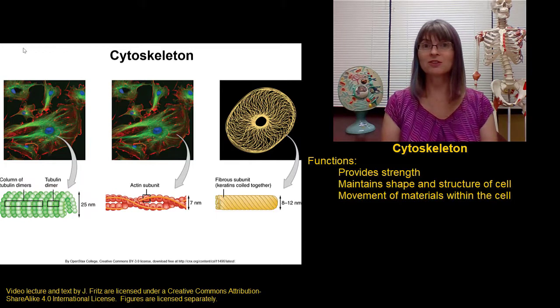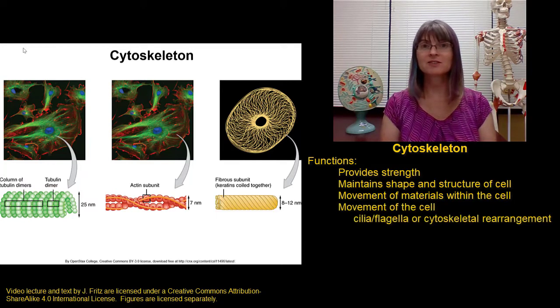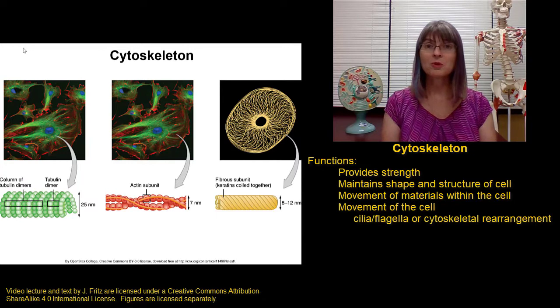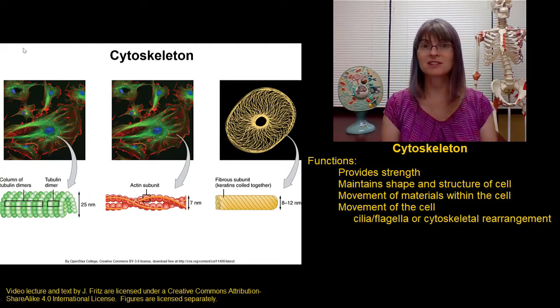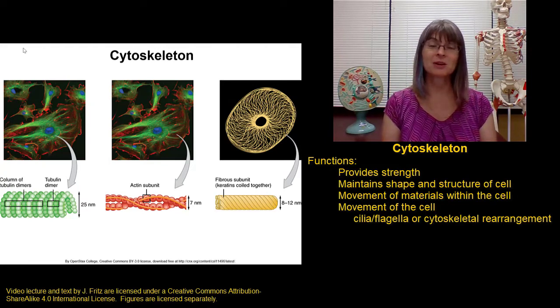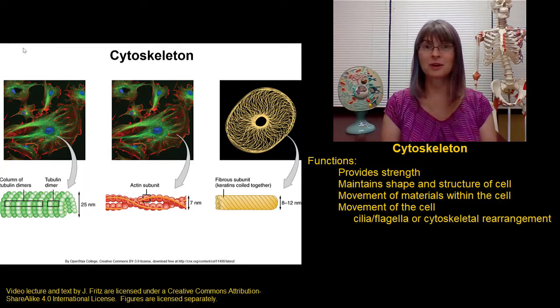A fourth function of the cytoskeleton in some cells is to allow movement either through the movement of a part of the cell like moving a flagellum in the sperm or moving cilia and respiratory tract cells or through rearranging the cytoskeleton to allow the movement of a cell like the white blood cells that are able to squeeze out of blood vessels based on cytoskeletal rearrangements.